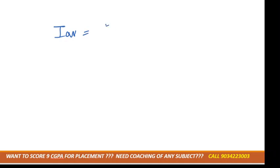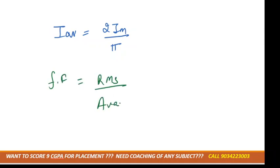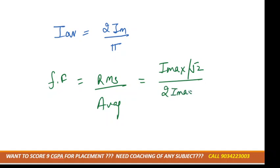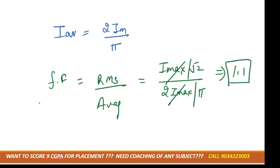Similarly, the average value formula is 2·I_max / π. So the form factor equals I_rms / I_average, which is (I_max / √2) divided by (2·I_max / π). The I_max terms cancel, and solving gives the form factor as 1.1 — it is unitless because both I_rms and I_average are in amperes.